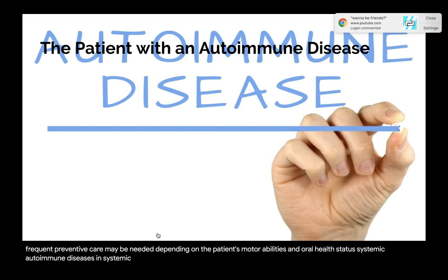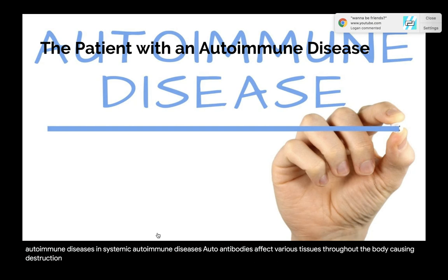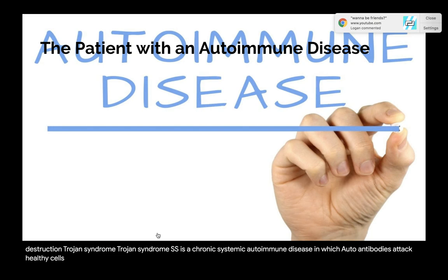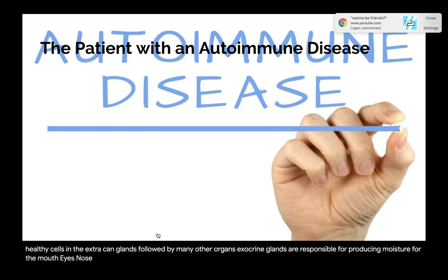In systemic autoimmune diseases, autoantibodies affect various tissues throughout the body causing destruction. Sjögren's syndrome (SS) is a chronic systemic autoimmune disease in which autoantibodies attack healthy cells in the exocrine glands, followed by many other organs. Exocrine glands are responsible for producing moisture for the mouth, eyes, nose, throat, and skin.